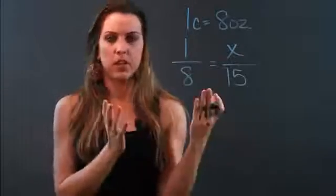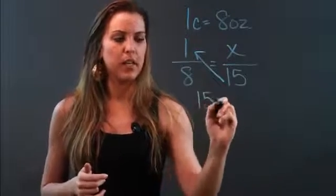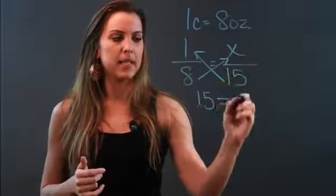Now this is a proportion, so I'm going to go ahead and cross multiply to solve it. So I get 15 times 1 is 15, bring down my equal sign, and I get 8 times x is 8x.